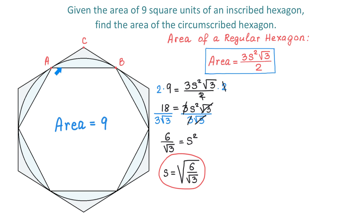Take a look at triangle ABC. This is an isosceles triangle because sides AC and BC are equal. They are equal because if we have a circle and a point outside the circle, and from that point we draw two tangent lines to the circle, then segment AC equals segment BC. In this triangle we know side AB and need to find one of the shorter sides, for example AC.